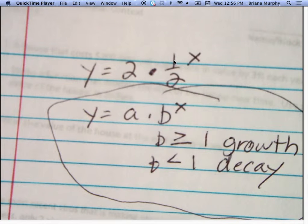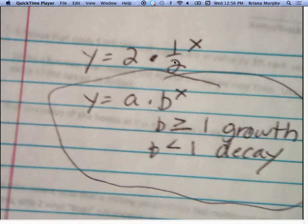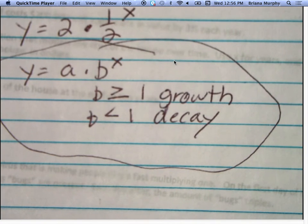Growth and decay. So I want to point out if we're looking at the equation y equals a times b to the x, if b is greater than or equal to 1, then it's growth. But if b is less than 1, it is decay.